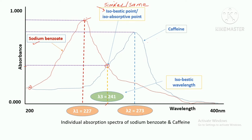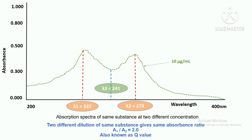Similarly, the second intersection point is also referred to as an isobestic or isoabsorptive point, with its corresponding isoabsorptive wavelength on the x-axis. So there are two isobestic wavelengths for sodium benzoate and caffeine — these are characteristic wavelengths, similar to the lambda max of each drug. For our calculations with sodium benzoate and caffeine, we will use this isobestic wavelength.